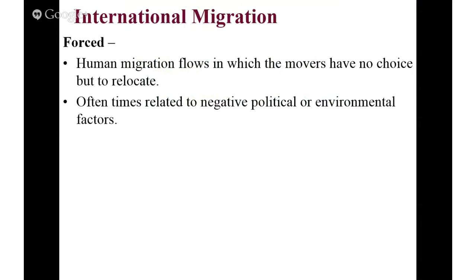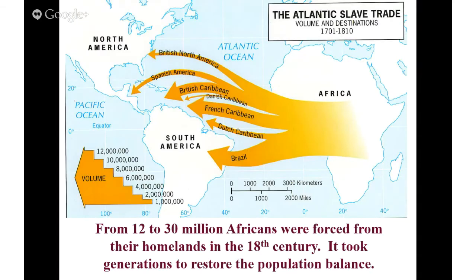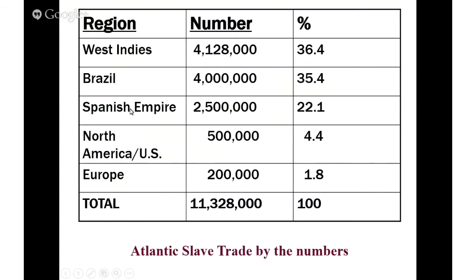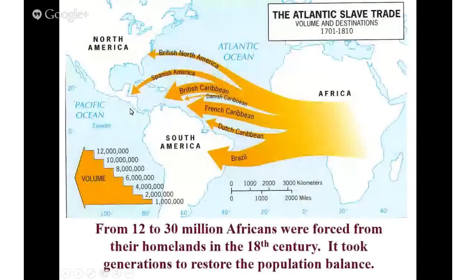Forced migration is when there is no choice but to relocate. Often this occurs because of political genocide, where a group of people is targeted by a government based on race, religion, ethnicity, or environmental factors. A really good historic example is the African slave trade across the Atlantic Ocean, where numerous enslaved people were forced to relocate permanently. Another example is the Holocaust — Jews forced to migrate across borders to camps in places like Poland from Germany. That would be forced migration.